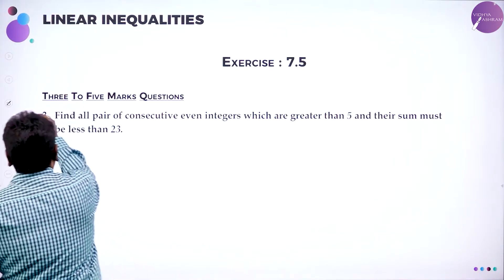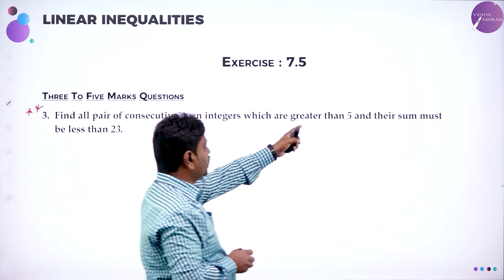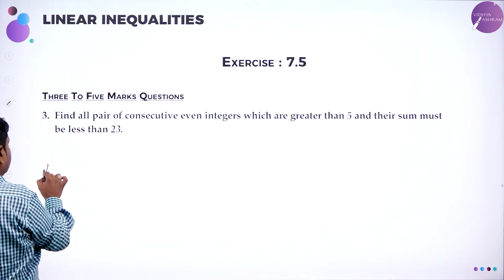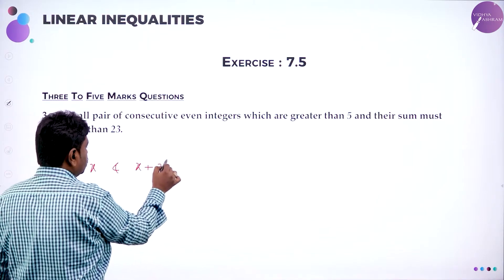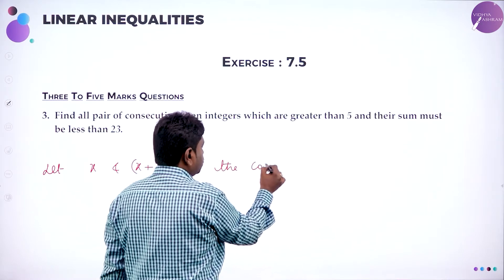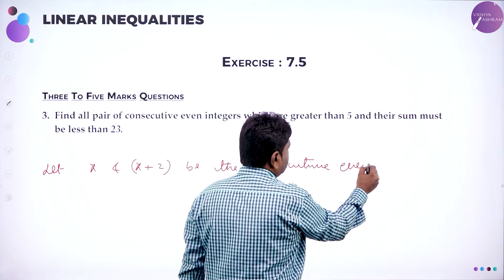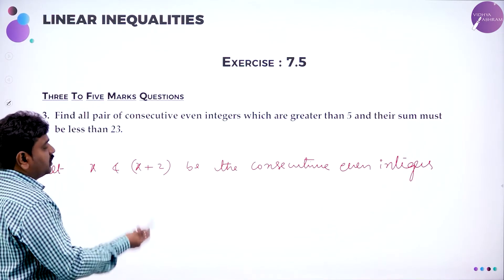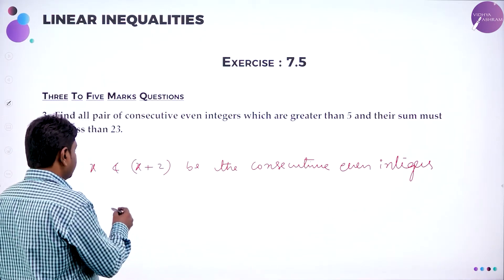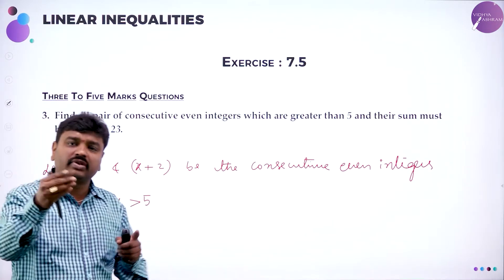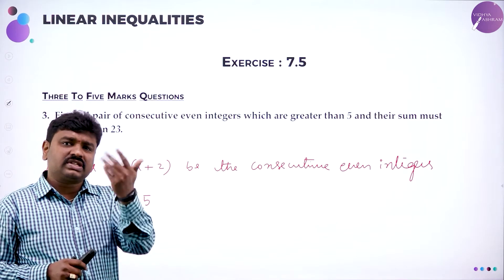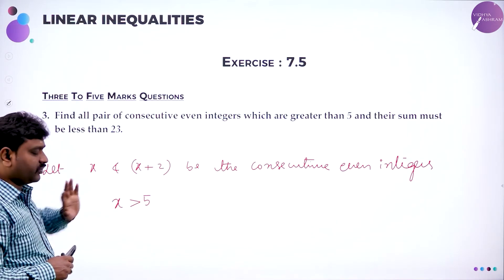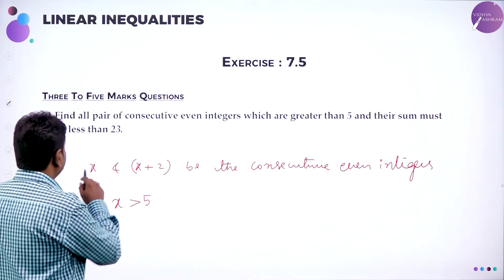Now, find all pairs of consecutive even integers which are greater than 5 and their sum is less than 23. This is a most important question. Let x and x plus 2 be the consecutive even integers. Consecutive even numbers means 2, 4, 6 — they are all consecutive even numbers. All the consecutive integers which are greater than 5 means each integer is greater than 5. So x is greater than 5 — if x is greater than 5, definitely x plus 2 will also be more than 5.